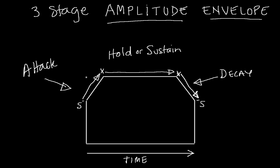So now we have a one-two-three stage amplitude envelope. It's still really about the angle of the attack and the angle of the decay — telling us how fast it attacks and how fast it decays back down to silence.